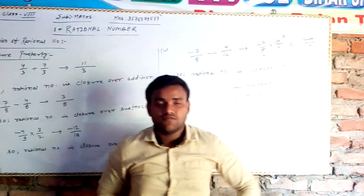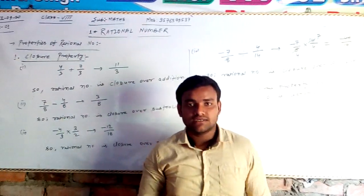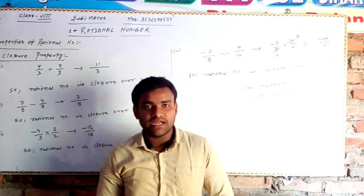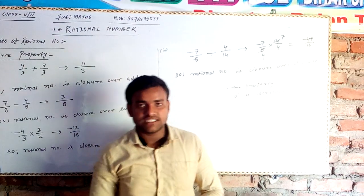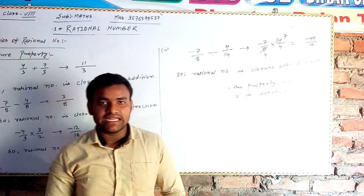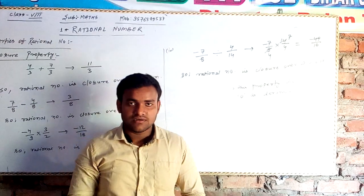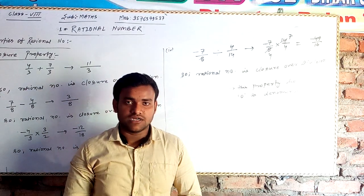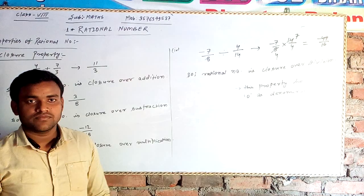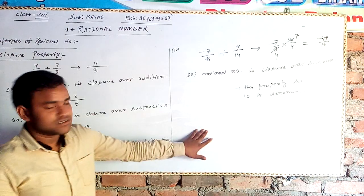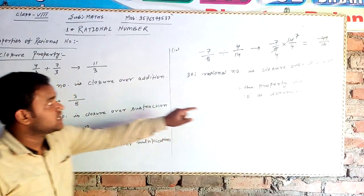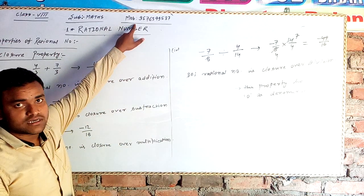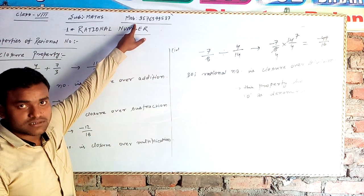The remaining properties — commutative, associative, and distributive property over addition and subtraction — I will discuss in the next lecture. So wait and watch. If you have any doubt, you may contact me. Thanks.